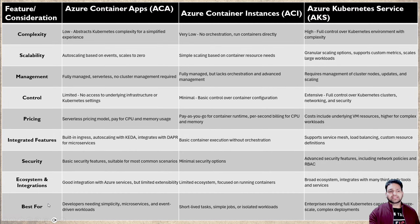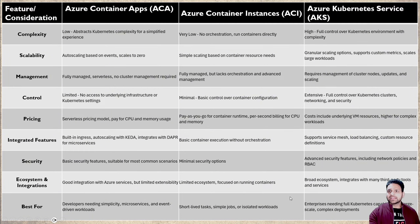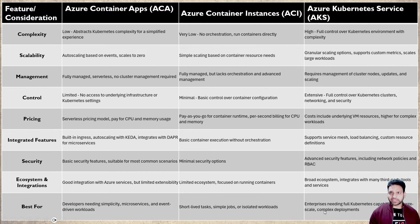The best fit for developers needing simplicity, microservices, and event-driven workloads is ACA. ACI is best for short-lived tasks, simple jobs, and isolated workloads. And finally, AKS is best where full Kubernetes capabilities for large-scale or complex deployments need to be taken care of.